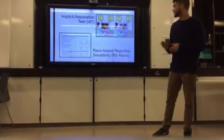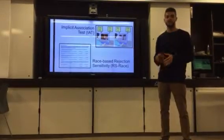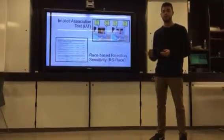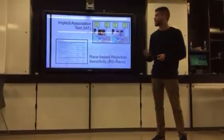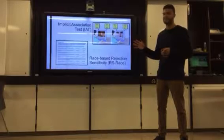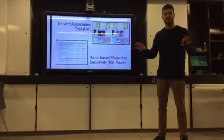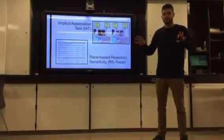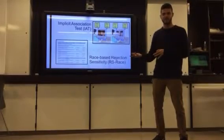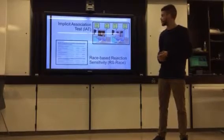We have the race-based rejection sensitivity test, which is essentially a survey which tried to assess how likely individuals were to believe that someone was going to racially discriminate against them. And they wanted to use both of these as two different subgroups to make sure that they could see whether someone's predisposition would affect their relationship in any way and the stress response that they would have after it.